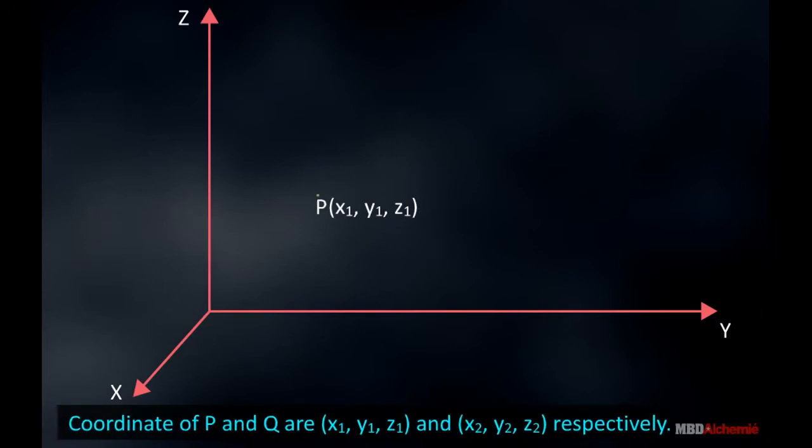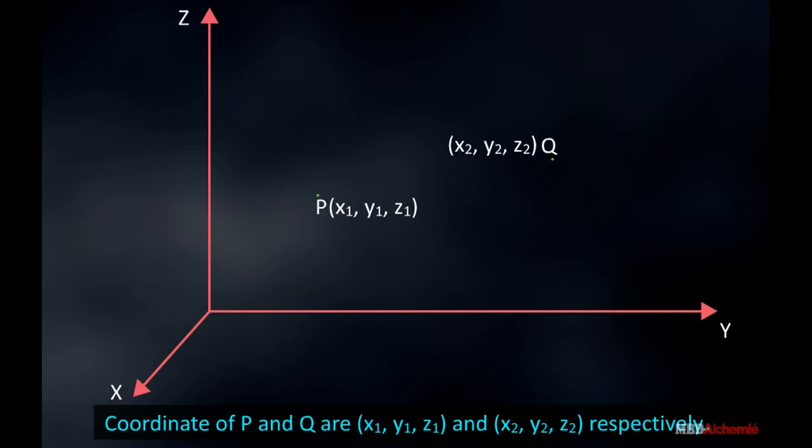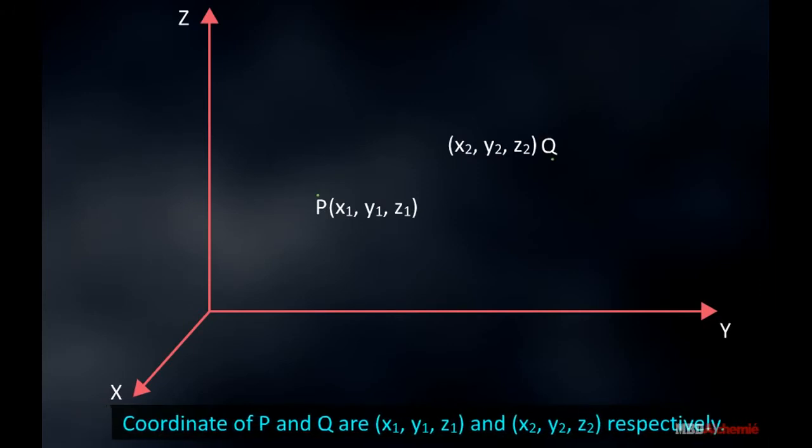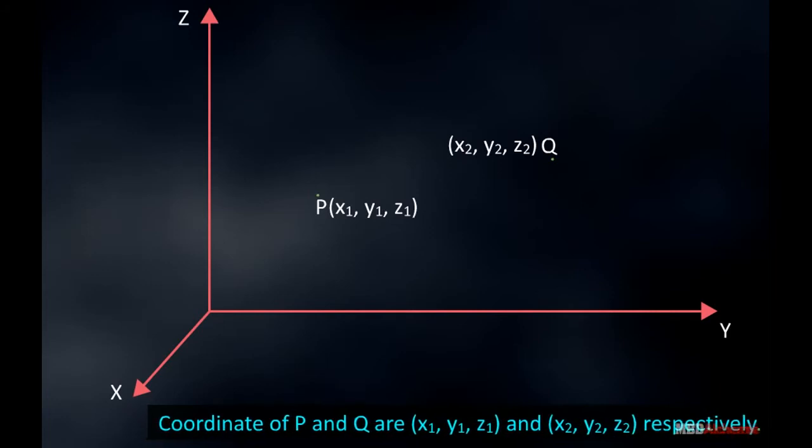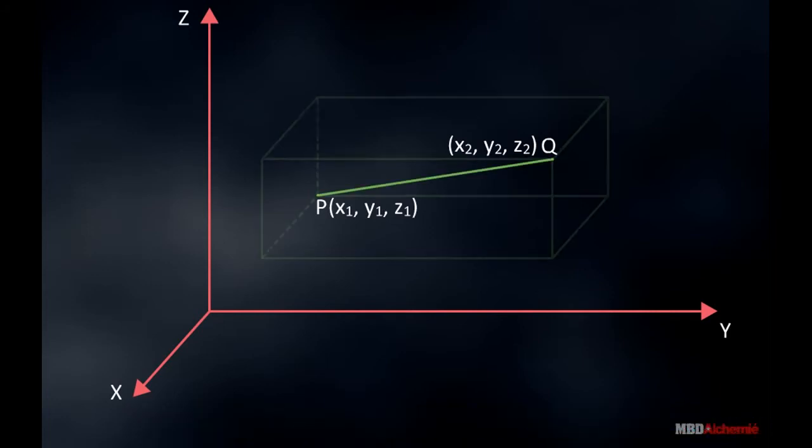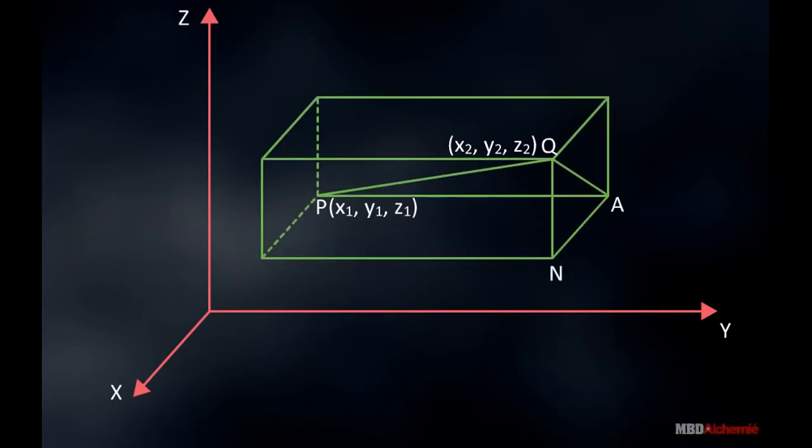Let P(X1, Y1, Z1) and Q(X2, Y2, Z2) be two points in three-dimensional space. Through P and Q, draw planes parallel to coordinate planes so that they make a rectangular parallelepiped.